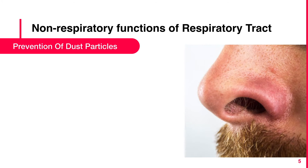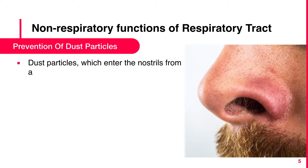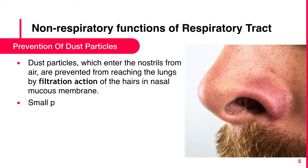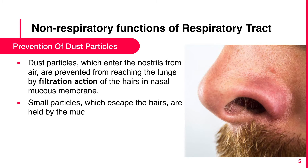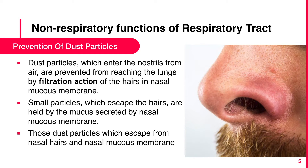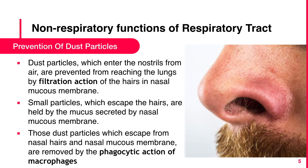Prevention of dust particles: Dust particles which enter the nostrils from air are prevented from reaching the lungs by the filtration action of the hairs in the nasal mucous membrane. Small particles which escape the hairs are held by the mucous secreted by the nasal mucous membrane. Those dust particles which escape from nasal hairs and nasal mucous membrane are removed by the phagocytic action of macrophages in the alveoli.